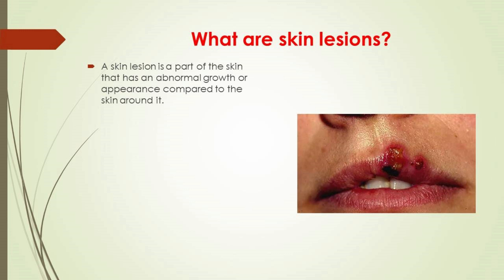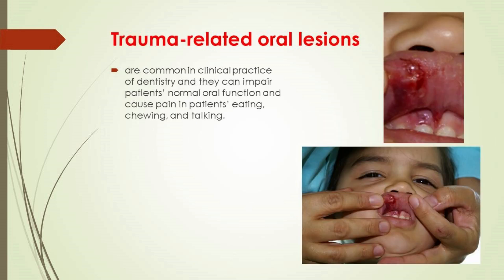What are skin lesions? A skin lesion is a part of the skin that has an abnormal growth or appearance compared to the skin around it. Two categories of skin lesions exist: primary and secondary. Primary skin lesions are abnormal skin conditions present at birth or acquired over a person's lifetime. Secondary skin lesions are the result of irritated or manipulated primary skin lesions. For example, if someone scratches a mole until it bleeds, the resulting lesion — a crust — is now a secondary skin lesion.